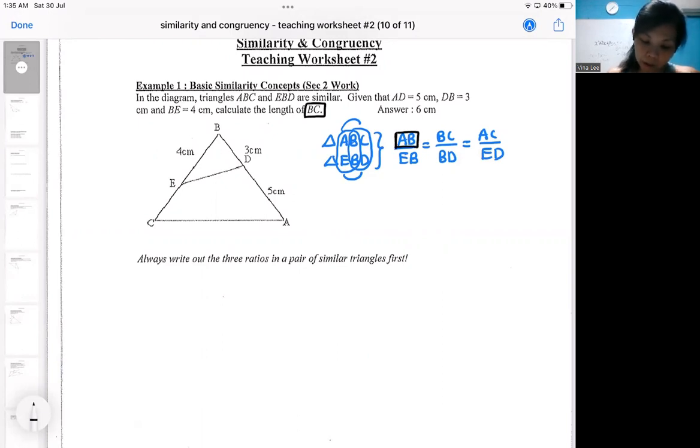So do you have AB? Yep, I have AB. AB is an eight. Then the next one is EB. So EB is a four. BC is the one that I'm interested in. And what I have BD. Yep, BD I have.